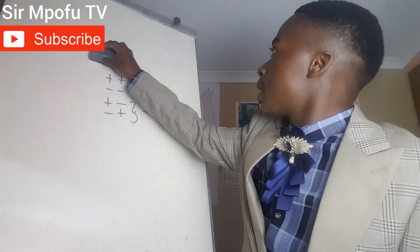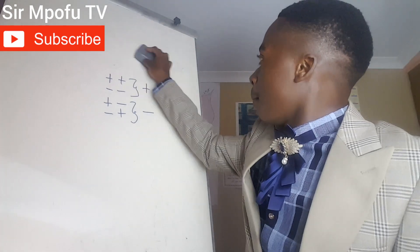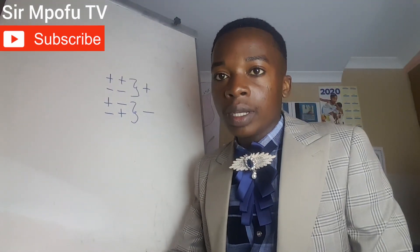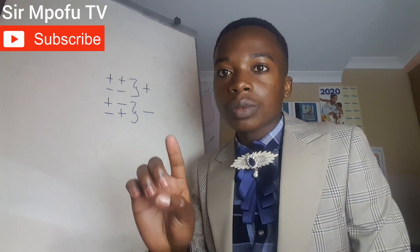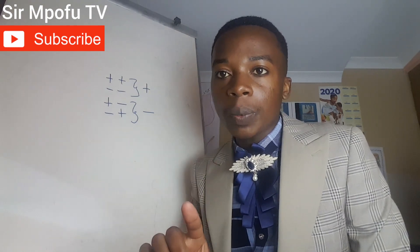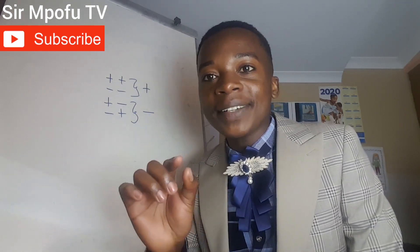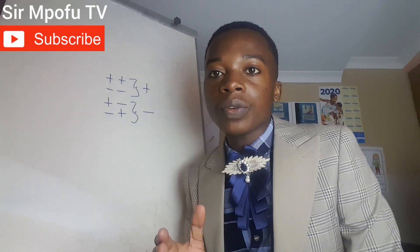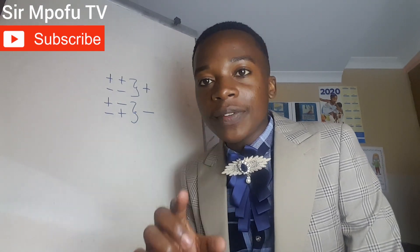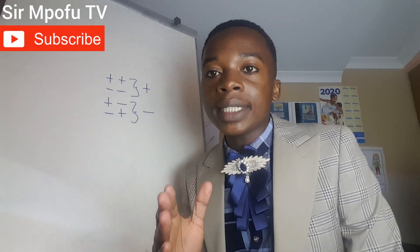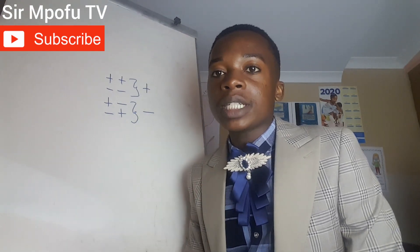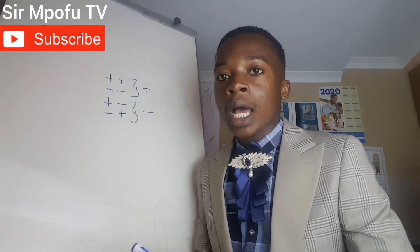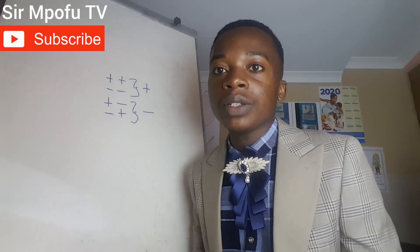In simple terms: if you are multiplying same signs you get a positive; if you are dividing same signs you get a positive; if you are multiplying different signs you get a negative; if you are dividing different signs you get a negative. Simply put: same signs give us positive, different signs give us negative.